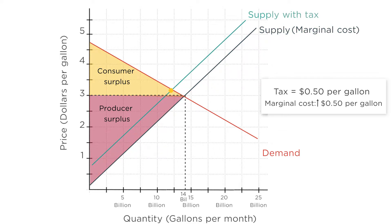With the tax, the equilibrium price increased to $3.25 a gallon and the quantity produced has decreased to 12 billion gallons a month.